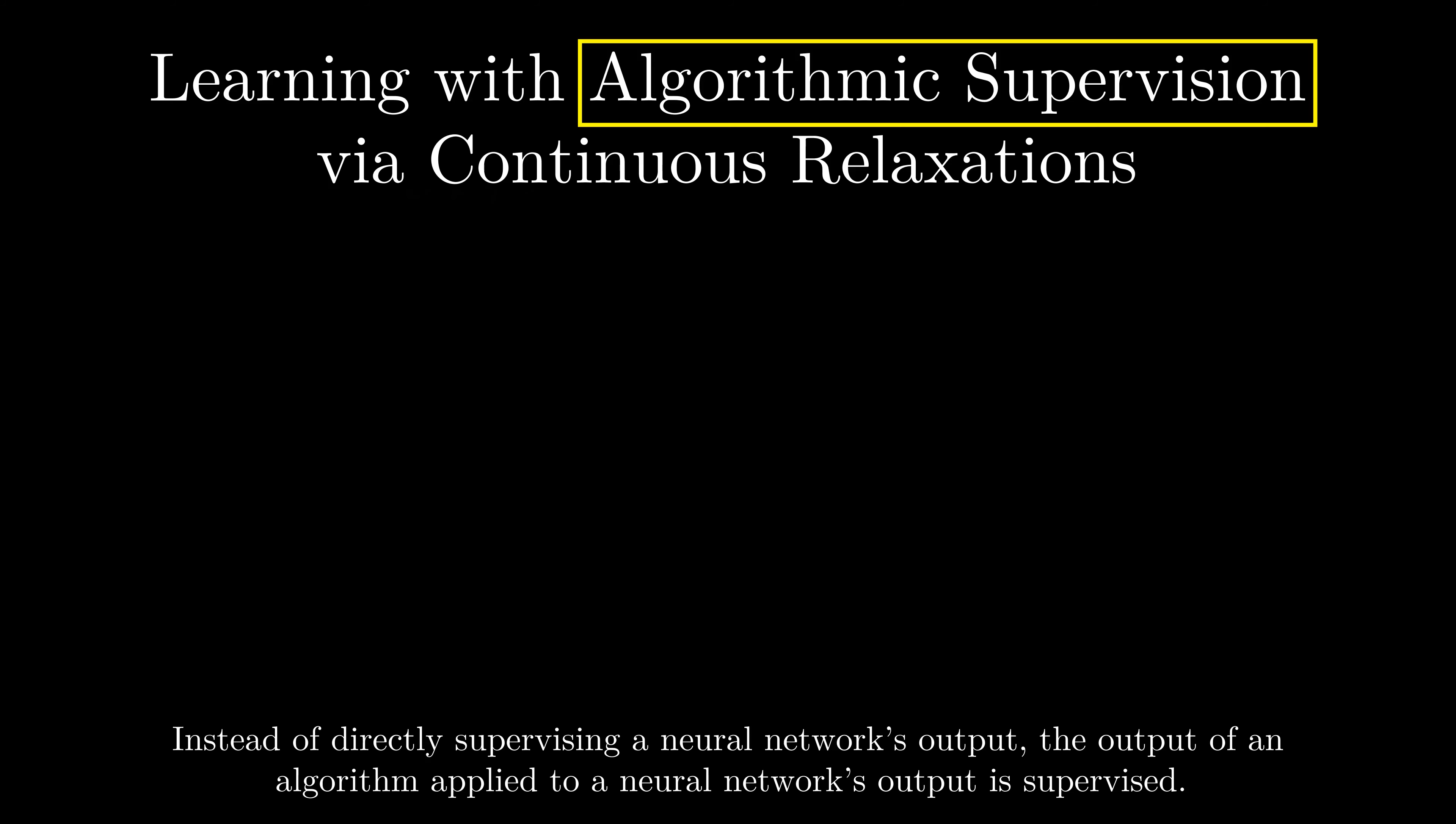An example for that is sorting supervision, where only the relative order of a set of elements is known while the absolute values remain unknown. For example, here we have a sorted set of multi-digit images. A CNN should now predict a value that preserves the order of the images. This should be done based only on the information that the set is sorted.